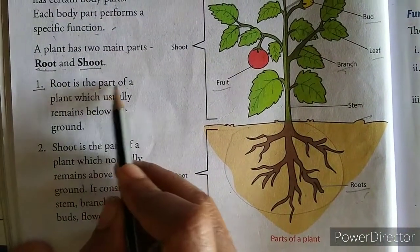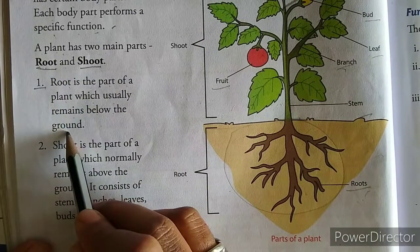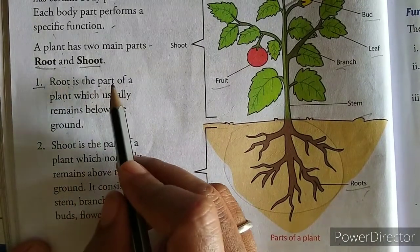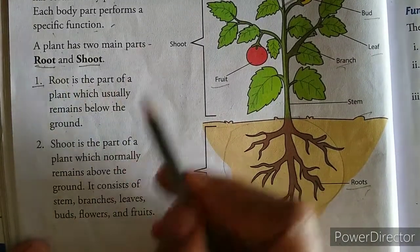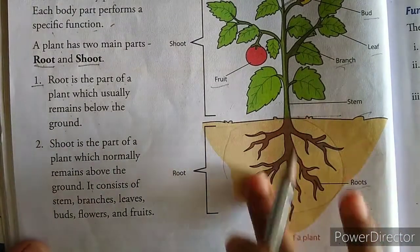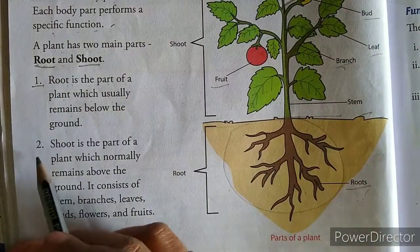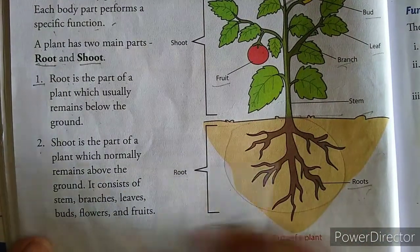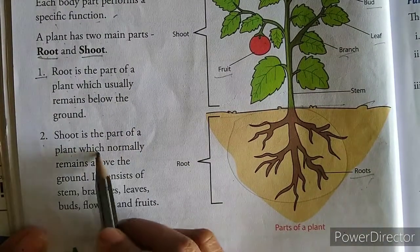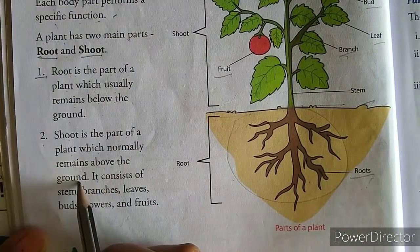Root is the part of a plant which usually remains below the ground. Root, plant ka woh part hota hai jo ground mein neeche ki taraf grow karta hai. Second: shoot is the part of a plant which normally remains above the ground.